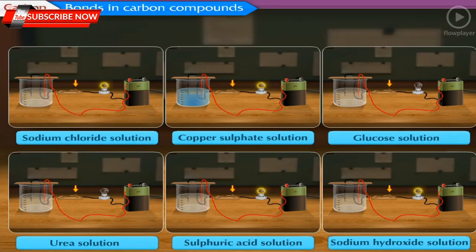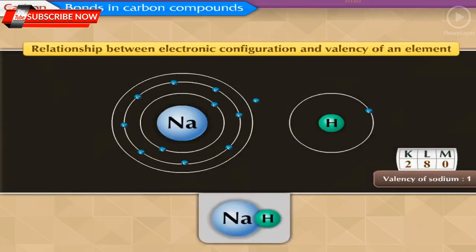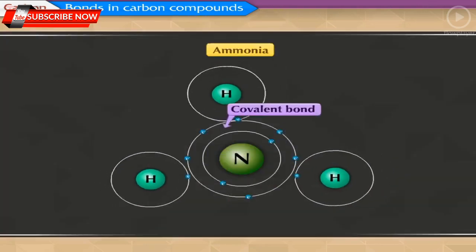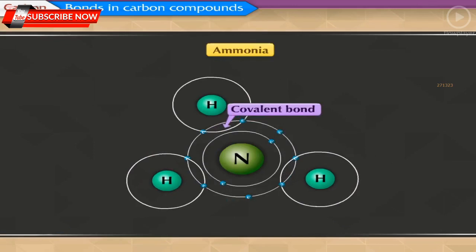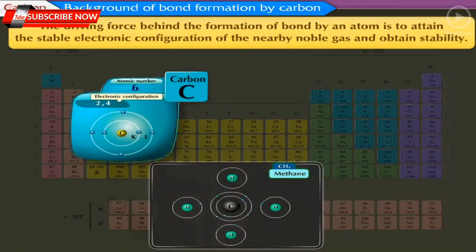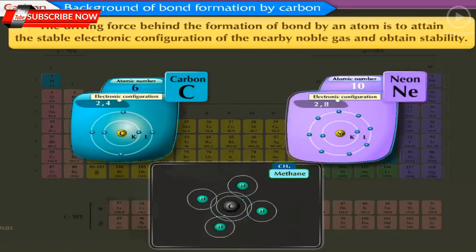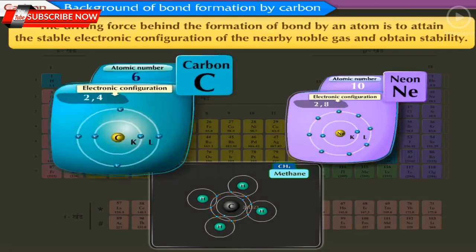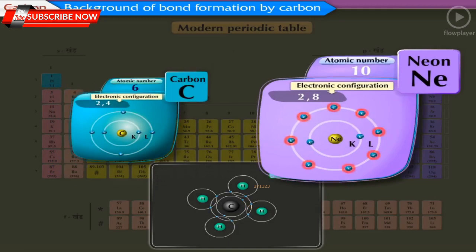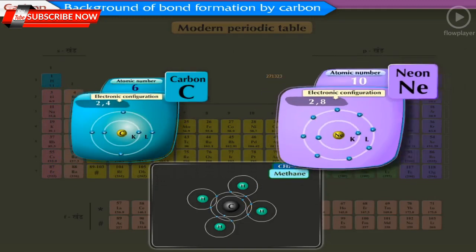In the previous standard, we learned about the relationship between electronic configuration and valency of an element, and also about ionic and covalent bonds. Now let us study about the electronic configuration of carbon and the covalent bonds formed. The driving force behind bond formation by an atom is to attain the stable electronic configuration of the nearby noble gas and obtain stability. As the valence shell of carbon contains 4 electrons, there can be many alternative routes to attain a noble gas configuration.